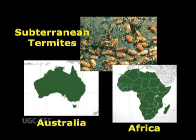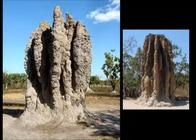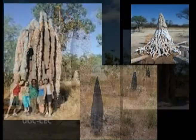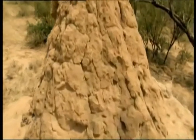In Africa and Australia, other subterranean species mix bits of soil with saliva to build nest mounds that may be up to 20 feet tall. The inside of a mound is divided into numerous chambers and galleries. The king and the queen live in a special cell deep inside the mound.